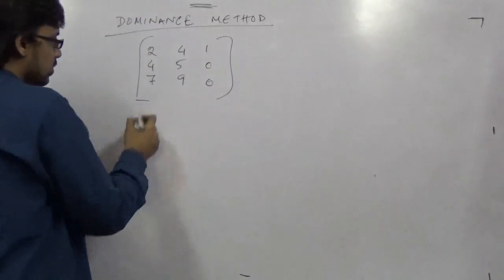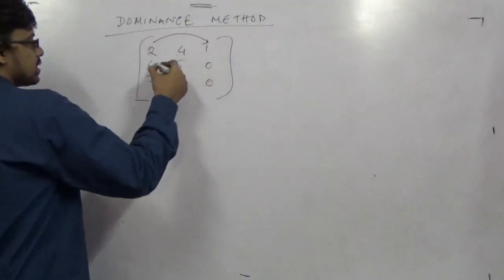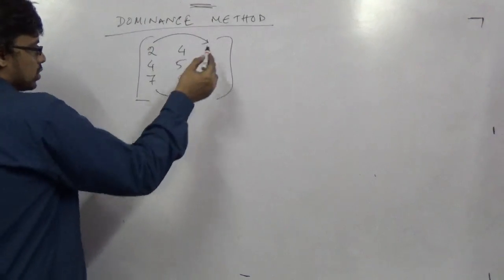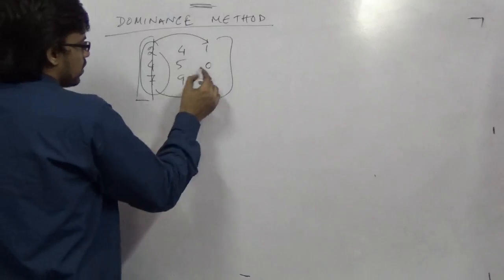Here you see this is greater than this: 4 is greater than 0, and 7 is greater than 0. So as it's a column, the smaller prevails and the larger is deleted. So again we have 4, 1; 5, 0; 9, 0.